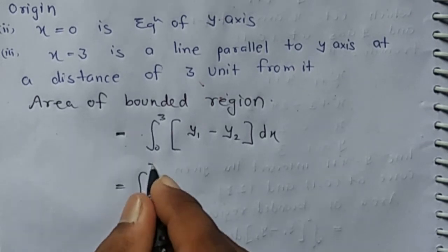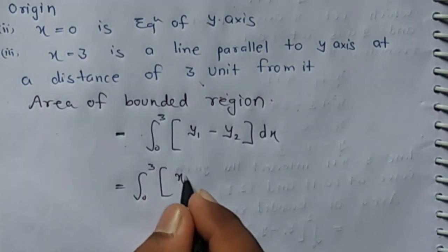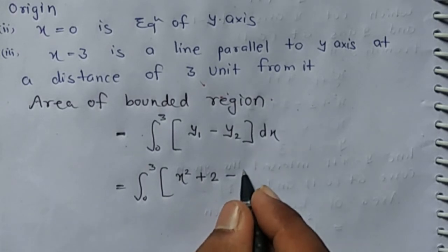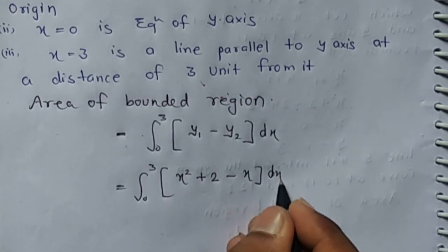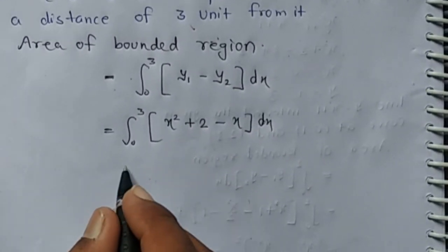From 0 to 3, y1 is x squared plus 2, and y2 is x, dx. Now integrate.